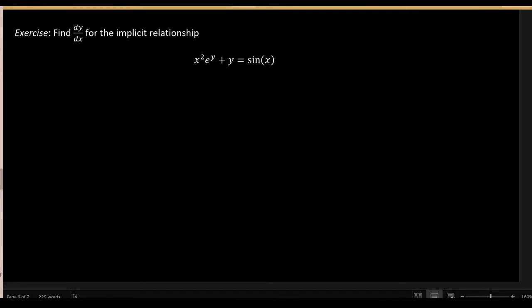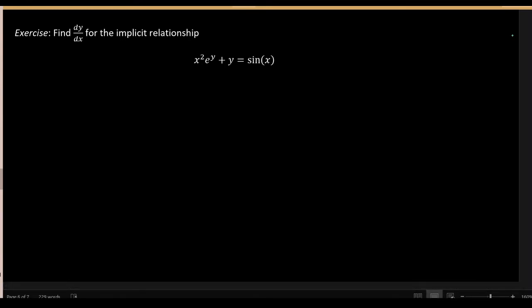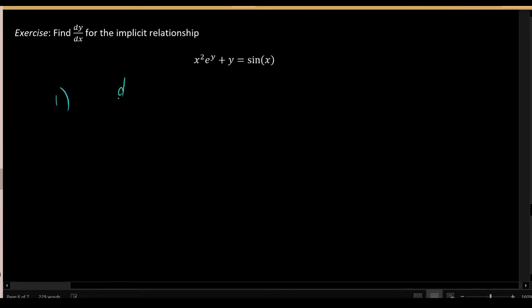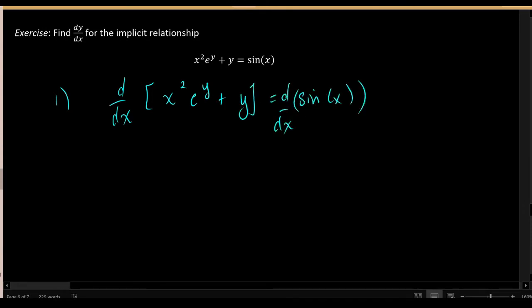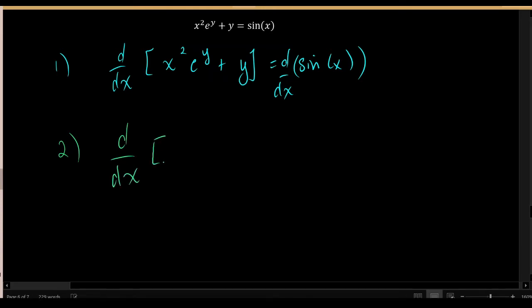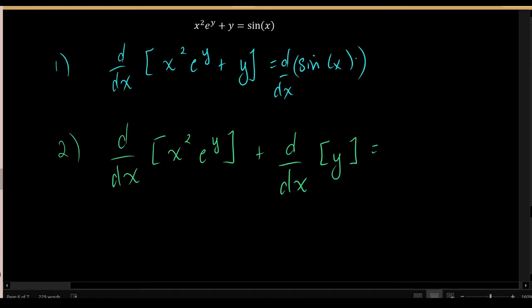Let's try something a little more complicated. Here we have the implicit relationship x squared times e to the y, plus y, equals sine of x. Step 1: apply d/dx to both sides. Now let's simplify using the derivative rules, applying the sum rule so that the derivative of the first term is taken separately from the derivative of the second. That equals the derivative of sine of x with respect to x, which is cosine of x.